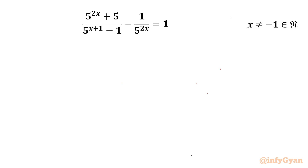Welcome back to Infigyan, my dear friends. Today in this video we are going to solve one very interesting and challenging exponential equation: 5 power 2x plus 5 over 5 power x plus 1, minus 1, minus 1 over 5 power 2x, equal to 1. Note that x cannot be equal to negative 1, and we have to find real solutions only.